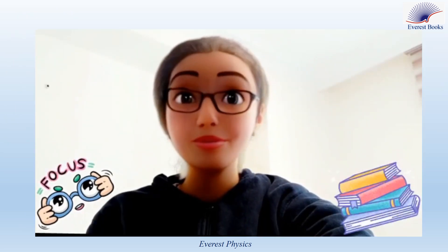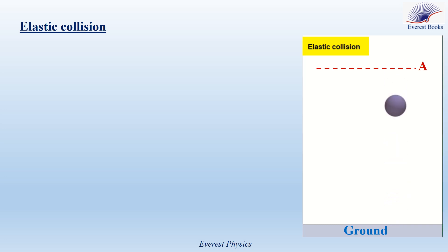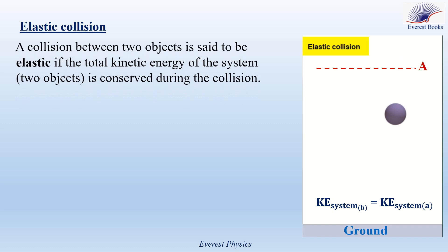Focus please, this is important. Elastic collision — a ball falls vertically downward from a point A and collides with the ground. Since after the collision the ball returns to its initial position A, we can conclude that there is no loss in the kinetic energy of the system. Therefore, a collision between two objects is said to be elastic if the total kinetic energy of the system is conserved during the collision. So the kinetic energy of the system just before the collision equals the kinetic energy of the system right after the collision.